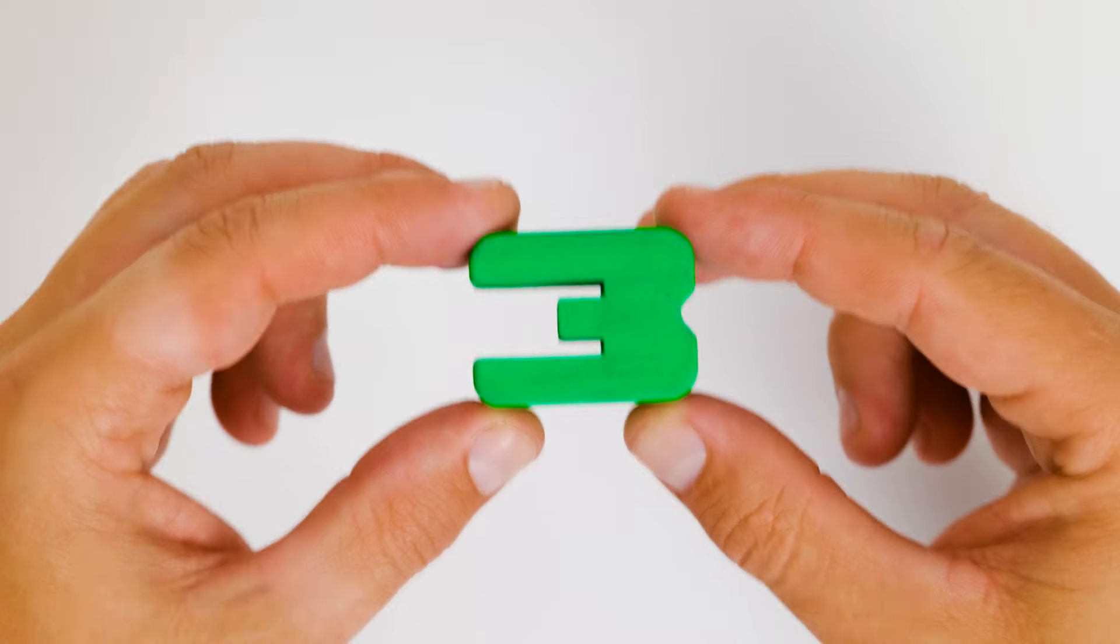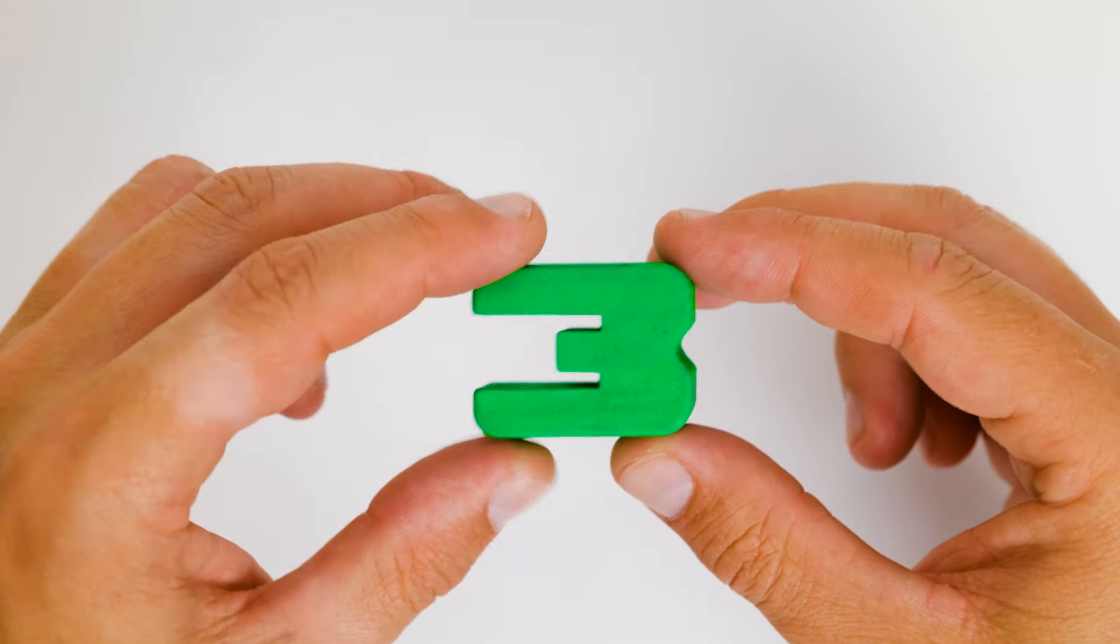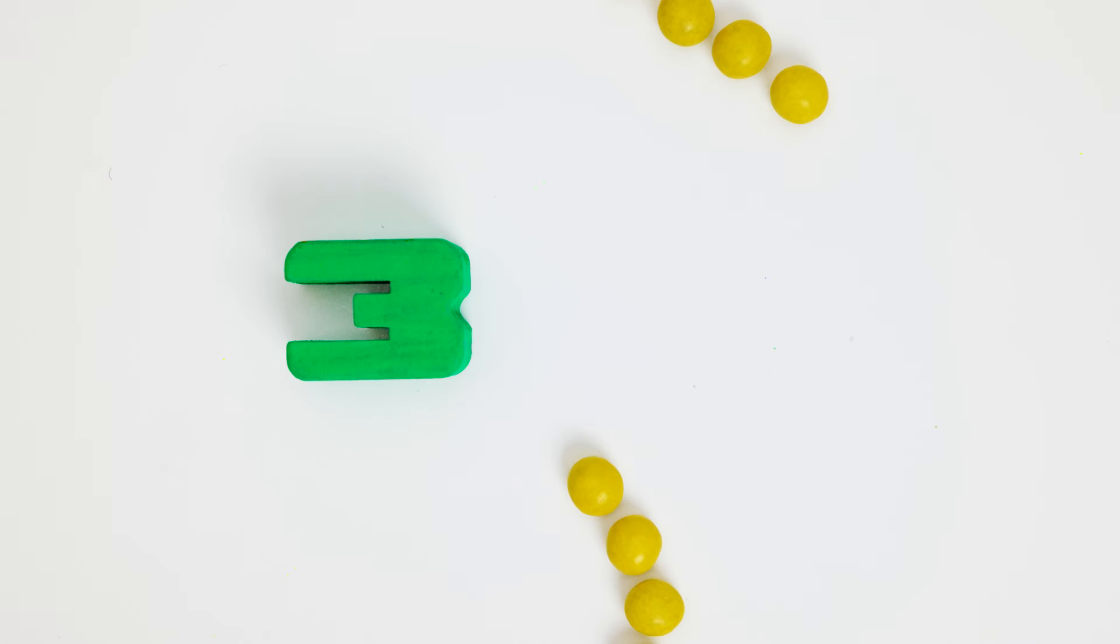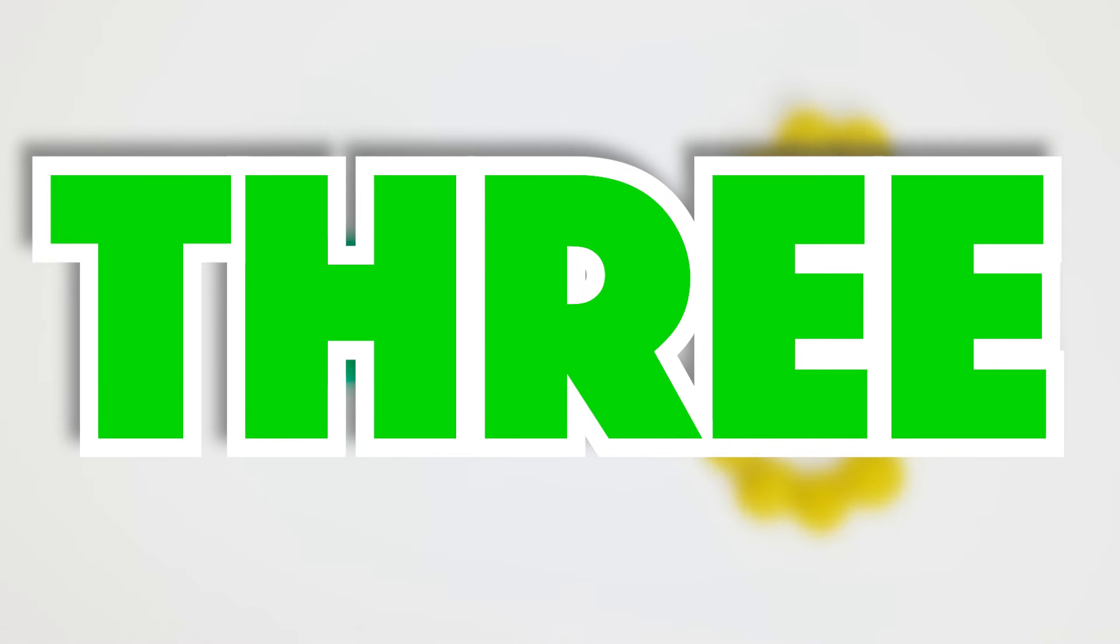But what comes after two? You're right! The number three is next. Good job! Bring in the dancing yellow balls. Round and round they go. One, two, three. Squish over a little more. Perfect! See? Three is easy to make. And this is how we spell it.